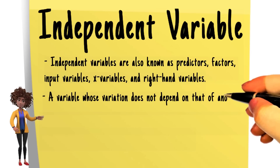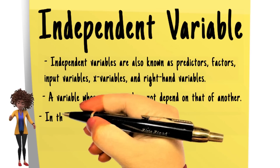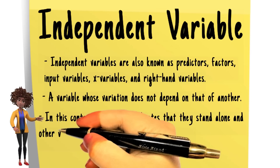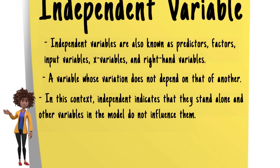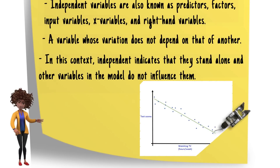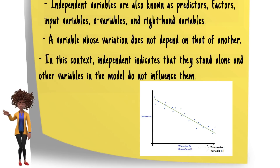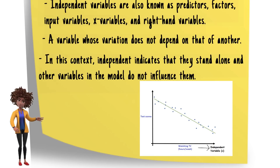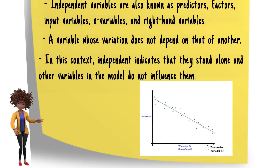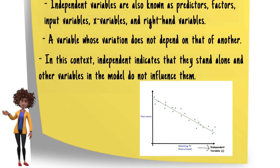What is an Independent Variable? Independent variables are also known as Predictors, Factors, Input Variables, X Variables, and Right Hand Variables, because they appear on the right side of the equals sign in a regression equation. Independent variables are the ones that you include in the model to explain or predict changes in the dependent variable. In this context, 'independent' indicates that they stand alone and other variables in the model do not influence them.